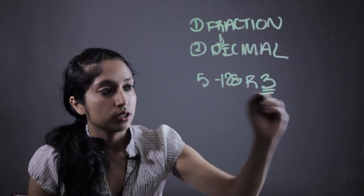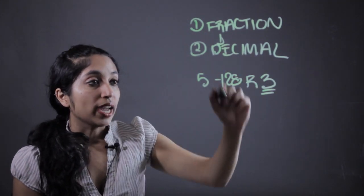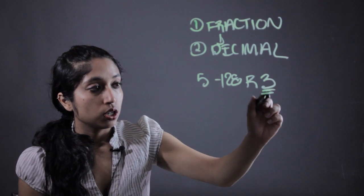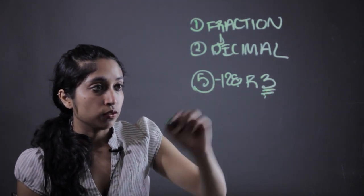Now, how do we make this a decimal? So the first thing we're going to want to do is turn it into a fraction. And this fraction is actually written as the remainder over the divisor, or the thing that 128 was divided by.